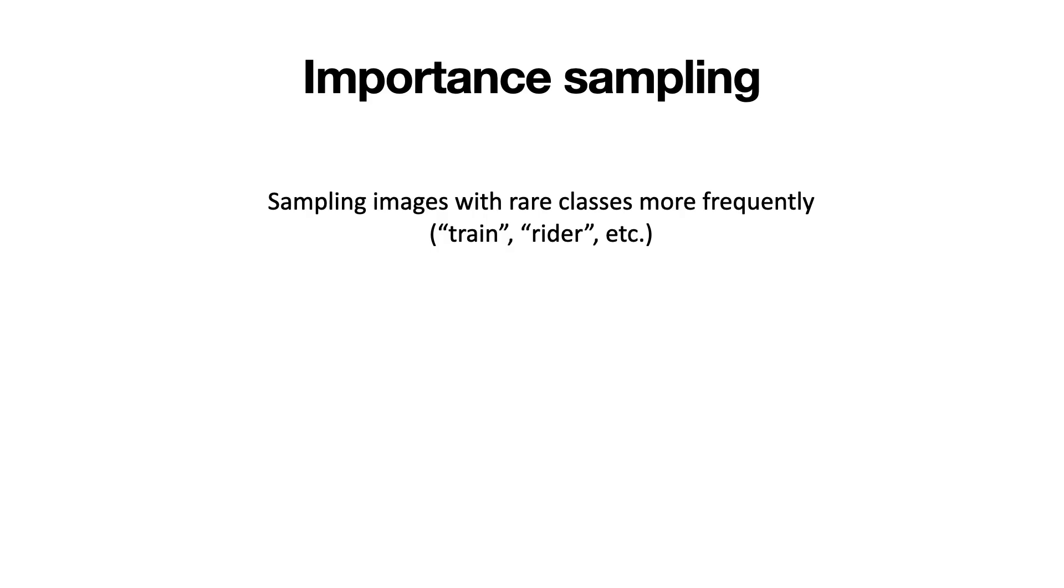At training time, we also sample target images with importance sampling. The idea is that we want to sample the images containing rare classes more frequently. To compute the sample probability for a given image, we simply estimate its class prior and normalize it with respect to all images in the complete dataset.